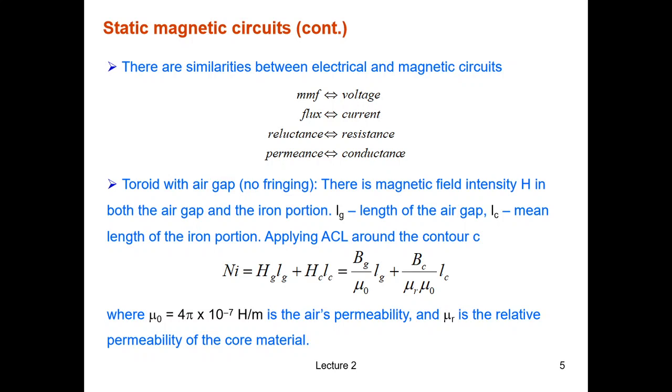Now let's assume that we have an air gap in that toroid, but we still assume that there is no fringing. Later we will see what fringing is. So the flux density—we will have two different environments now: the air and the core. The material of the core might be different from the air.